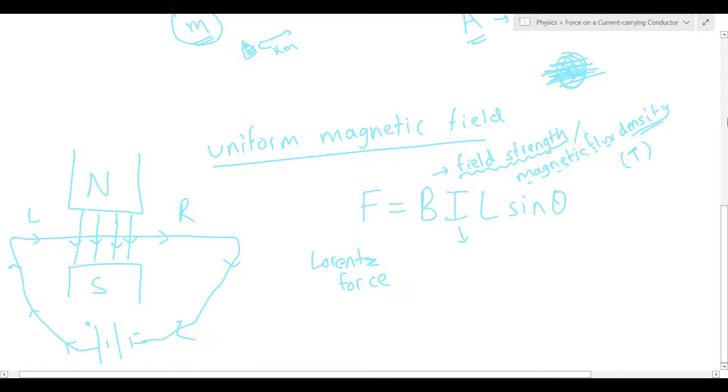I is going to be our electric current passing in the current carrying conductor, which we'll measure in amperes, and L is going to be the length of the wire that is exposed to the magnetic field. So we're going to consider the length from here, this end of the magnetic field, to here. This over here will be our length L.